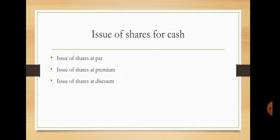For issue of shares for cash, we have three types: issue of shares at par, issue of shares at premium, and issue of shares at discount. Issue of shares at par means the value of shares and the issue price of the share are equal. For example, if the share value is 100 rupees and the issue price is 95 rupees, they are not equal — the issue price and the value of the share must be equal for it to be called issue at par.